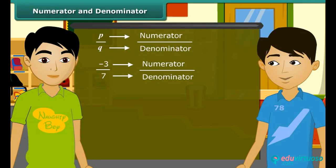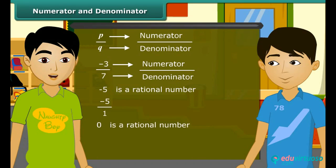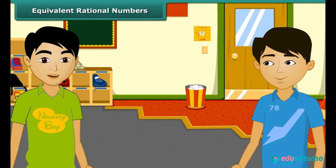Amit, are integers also rational numbers? Yes. For example, the integer minus 5 is a rational number because you can write it as minus 5 by 1. Similarly, the integer 0 is a rational number because 0 can also be written as 0 by 2, or 0 by 7, etc. I will now tell you about equivalent rational numbers.